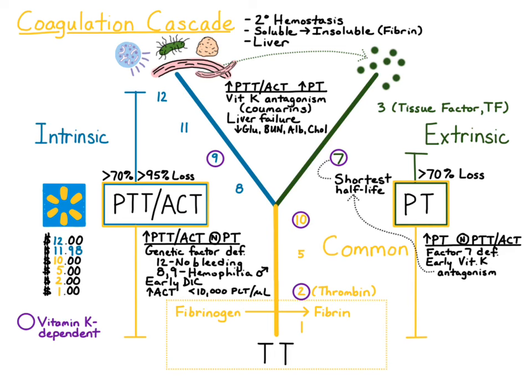The third cause for a prolonged PT and PTT is disseminated intravascular coagulation, or DIC. This is when there are blood clots forming within blood vessels. You might also see thrombocytopenia because the platelets are being consumed or utilized during clot formation. You'd also expect to see increased concentrations of D-dimers, which are covered in more detail in another video.